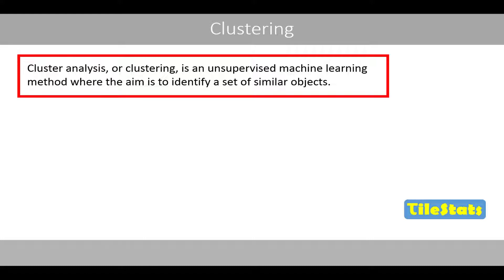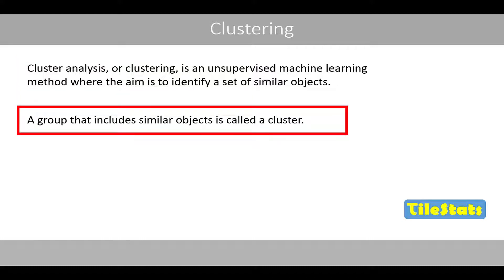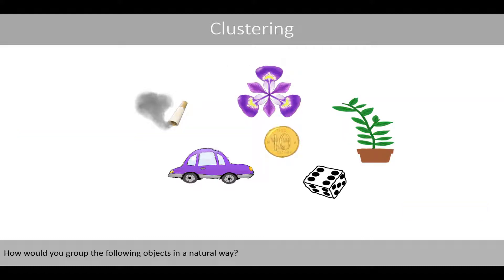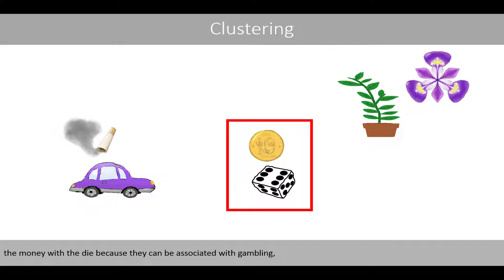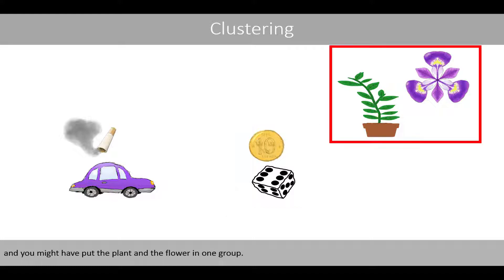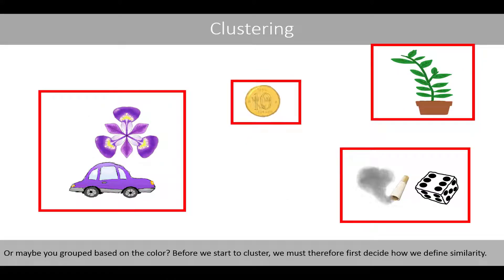Cluster analysis, or clustering, is an unsupervised machine learning method where the aim is to identify a set of similar objects. A group that includes similar objects is called a cluster. So how would you group the following objects in a natural way? Maybe you grouped the cigarette with the car because they can both produce smoke, the money with the dice because they can be associated with gambling, and you might have put the plant and the flower in one group. Or maybe you grouped based on color. Before we start the cluster, we must first decide how we define similarity.